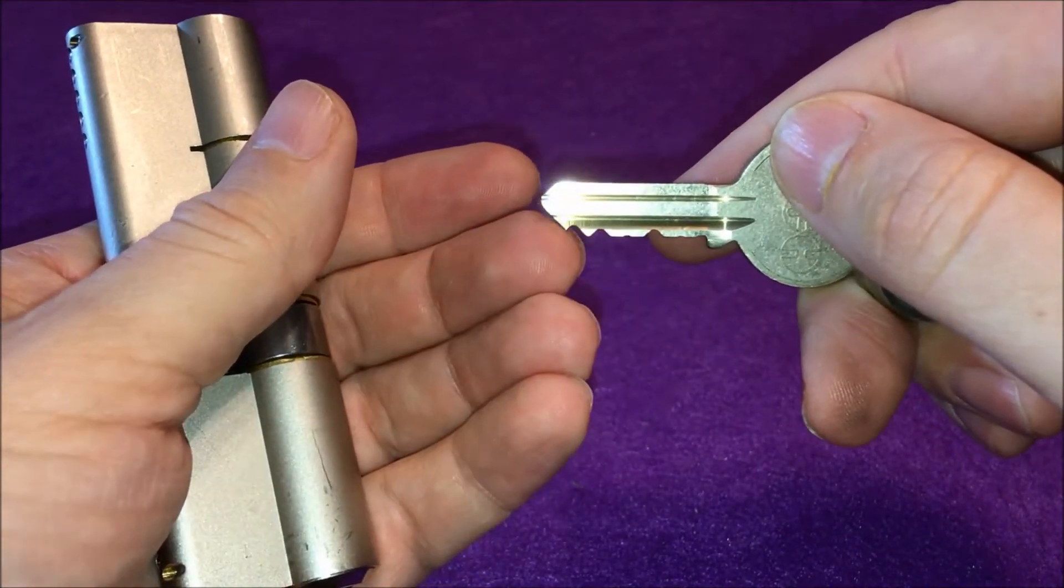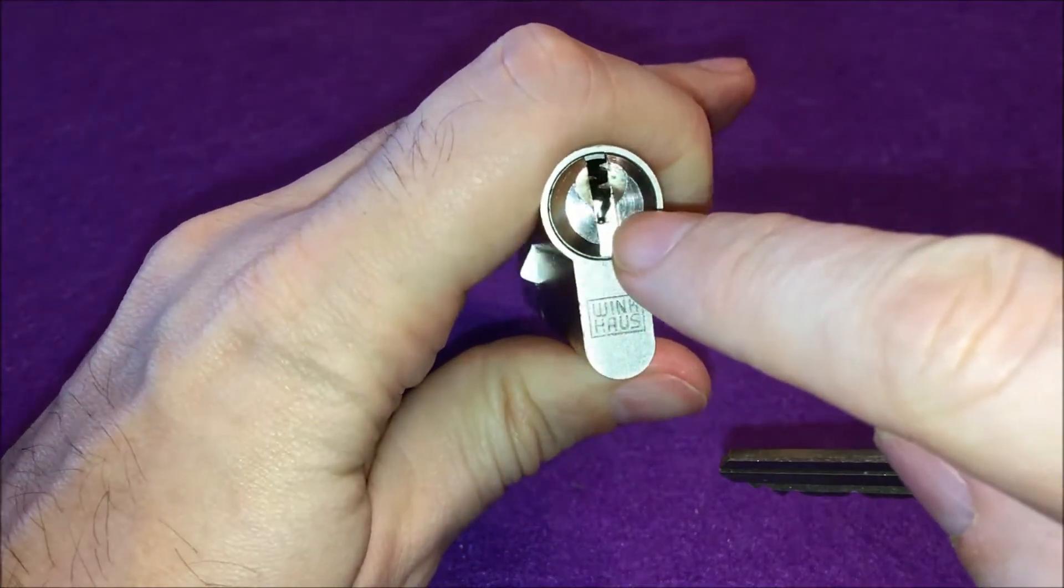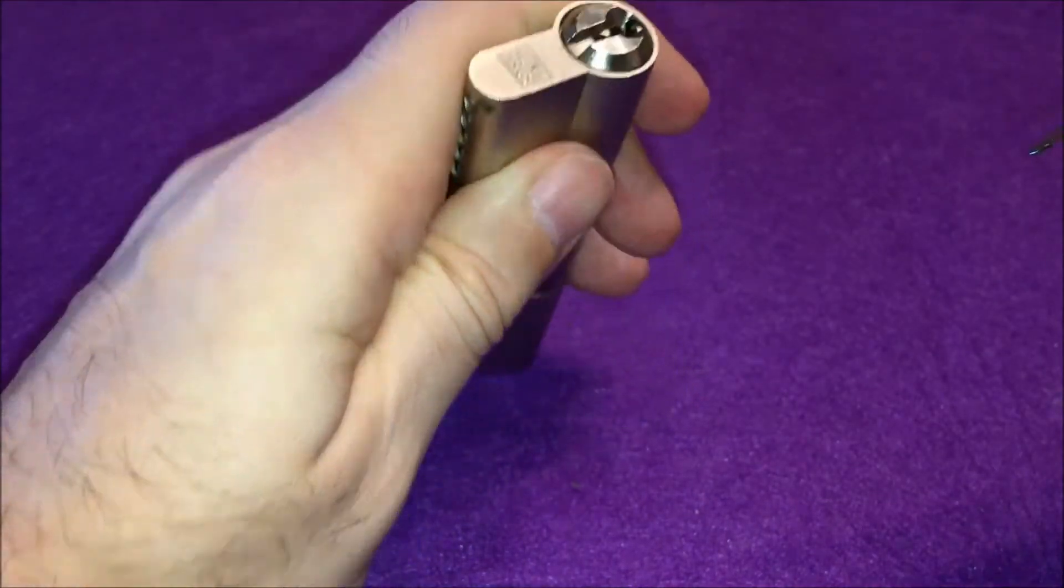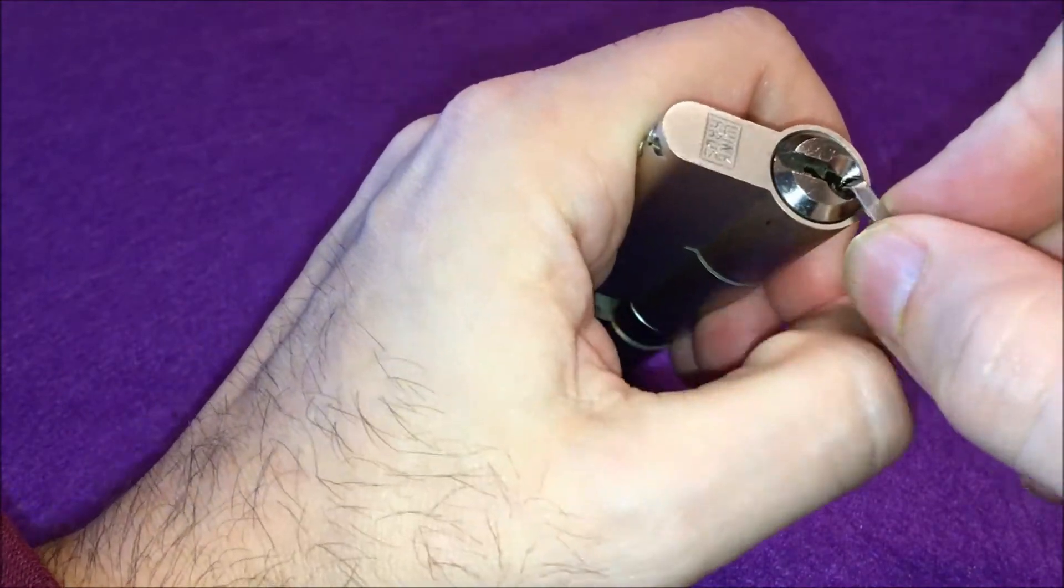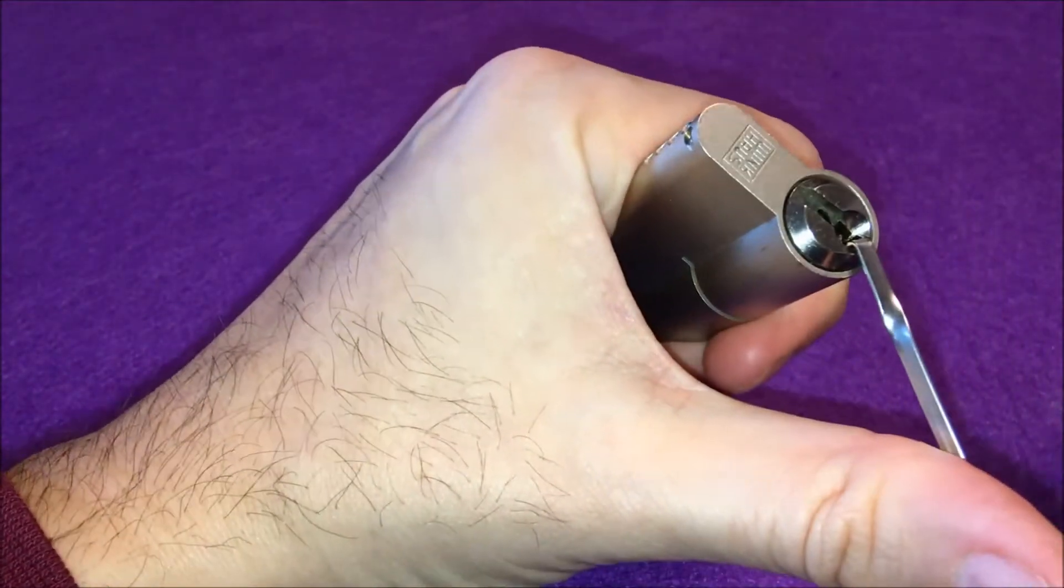They're all highs, there's some lows at the end. Maybe that helps a little bit, but because of this curve it's still not really easy. Anyway, let's get into the lock. See if it will work. Five pinner.